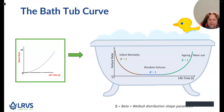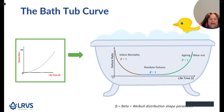Moving on to the rightmost section where beta is more than one — this is called the aging or wear-out section. The failure rate increases over time, corresponding to the time in the life of an asset where age-related failures appear to increase. The use of the asset over time generates deterioration, leading to an increase in repair frequency and subsequently an increase in the cost of maintenance. This section offers a predictable failure pattern over time and can be managed by a variety of maintenance tasks. In the ideal world, all assets should only have a wear-out failure rate so that financial and other resources can be planned and allocated for the medium or long term, including end-of-life replacement.